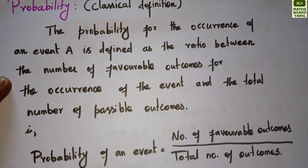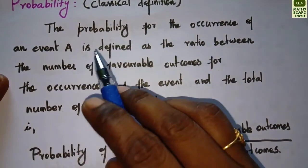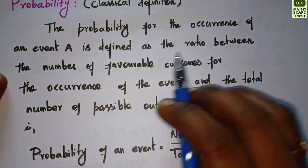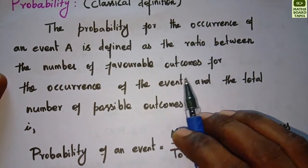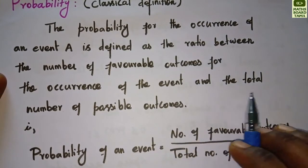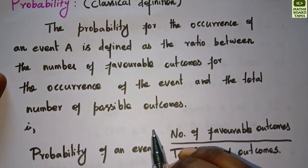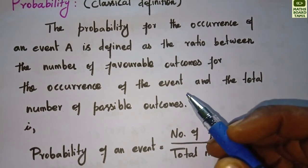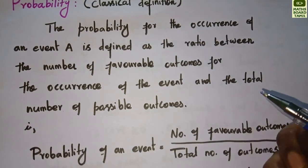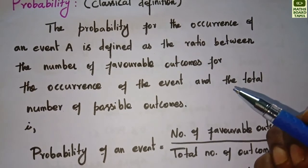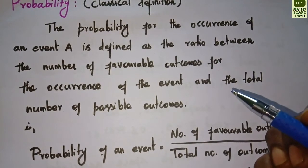Probability — classical definition. The probability for the occurrence of an event A is defined as the ratio between the number of favorable outcomes for the occurrence of the event and the total number of possible outcomes. So the classical definition: probability is the ratio of the number of favorable outcomes to the total number of possible outcomes.